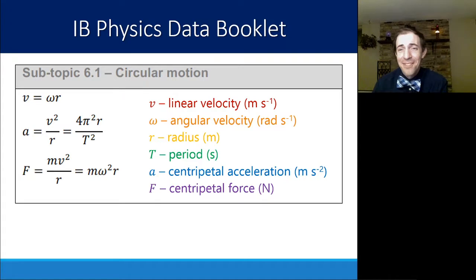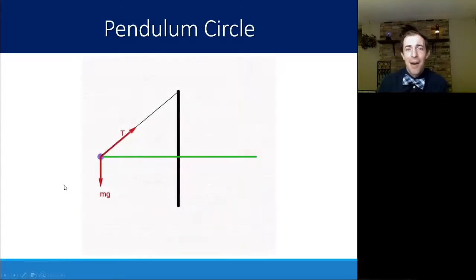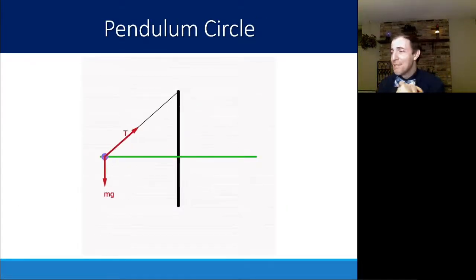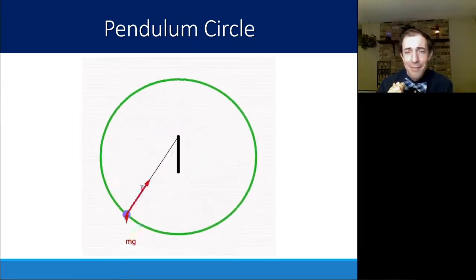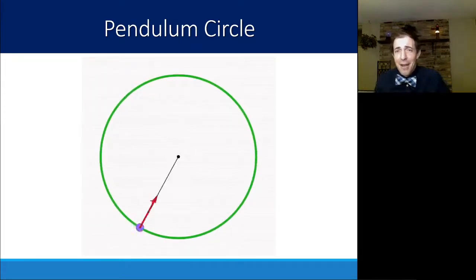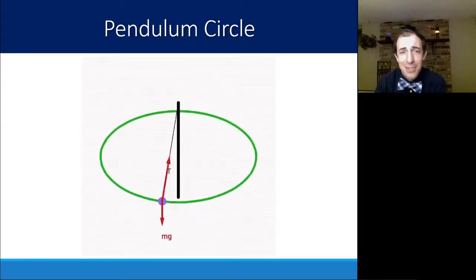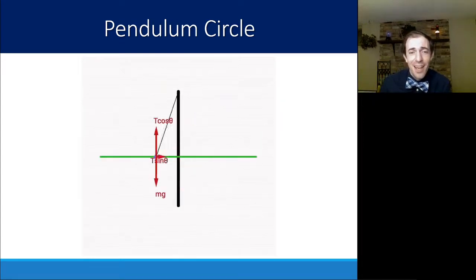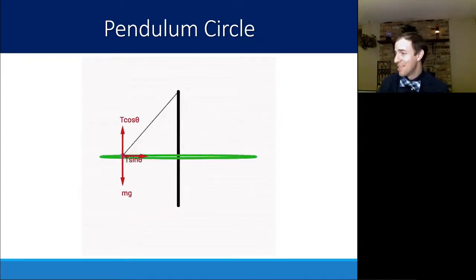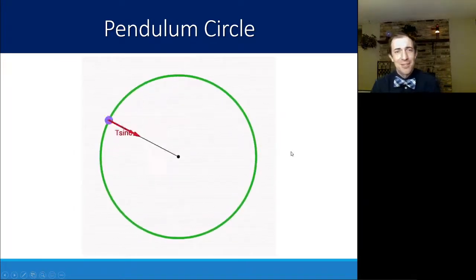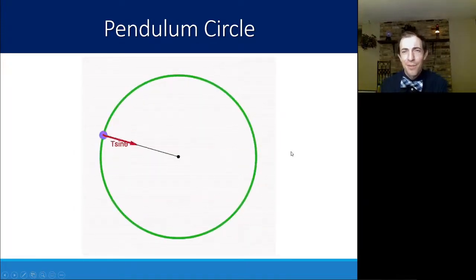Here are the equations that we have in our data booklet in subtopic 6.1. The equation that we're going to care about the most is this last one for the centripetal force, the force pointing in a circle. Now a pendulum circle can be defined using a free body diagram just like we saw before, but that free body diagram, just like the others, is constantly changing depending on where the center of the circle is. This animation does a really nice job of showing the forces that are at play and what this looks like in three dimensions.